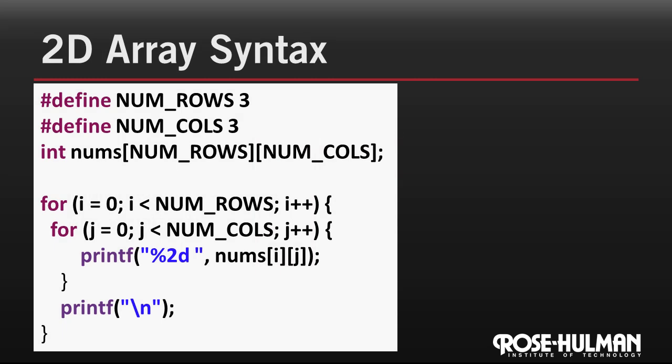Here's a simple example of declaring and displaying a simple 2D array of integers. We start off by defining constants for the number of rows and columns, and then declare the array. The size of each dimension is given in square brackets. The number of rows always comes first.